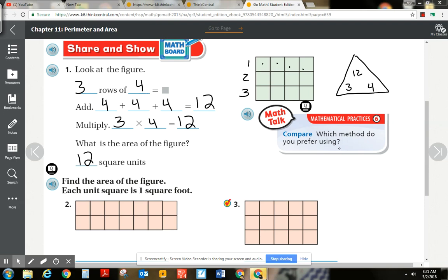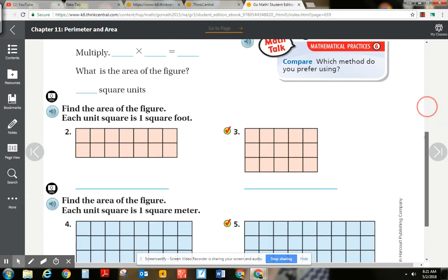Over here, go ahead and think about which method do you prefer? Do you prefer counting by ones? Do you prefer doing the repeated addition? Do you prefer the multiplication? It is important that we put the rows first if you're doing multiplication.